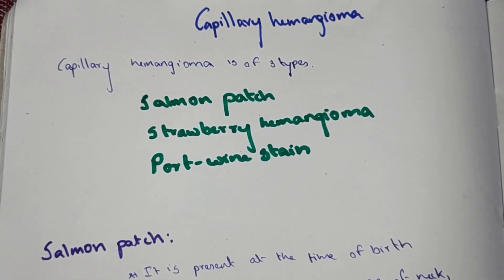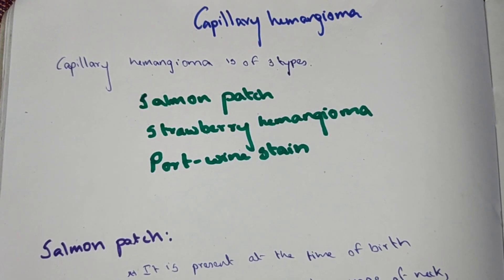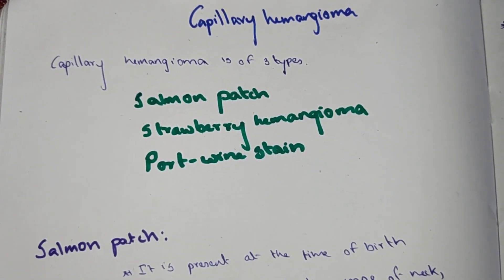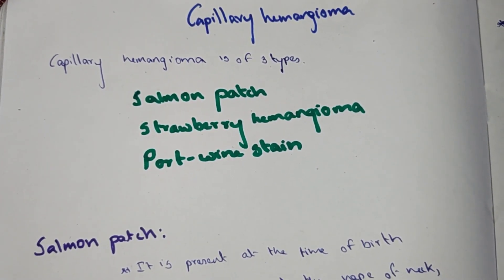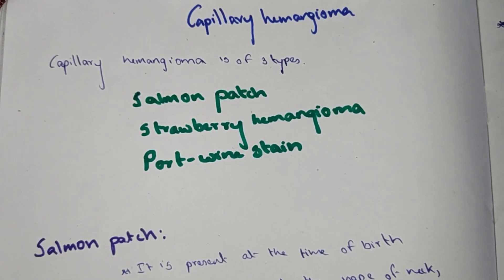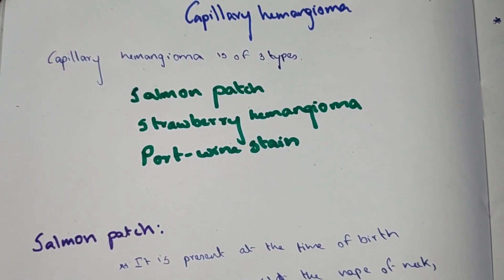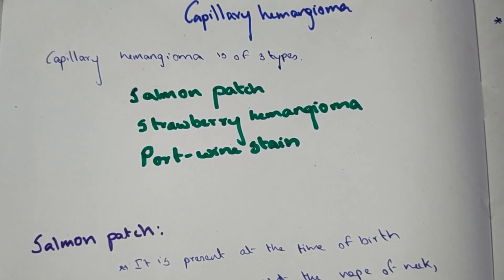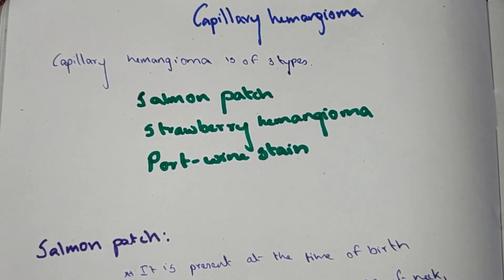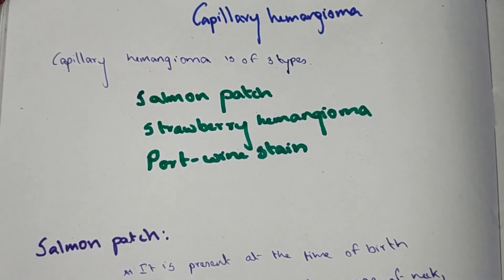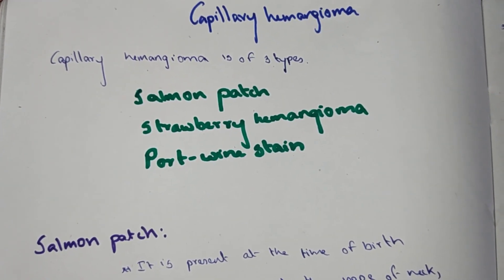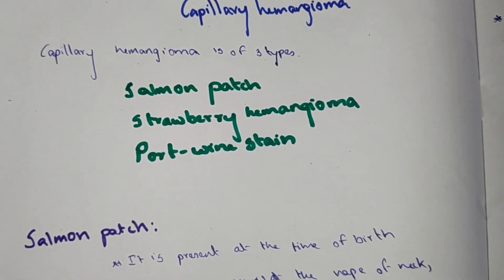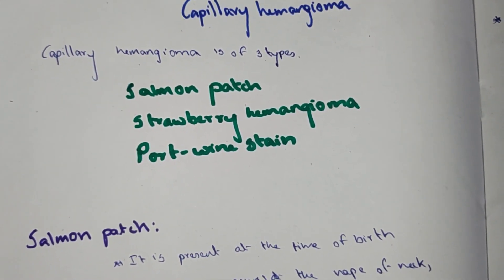Welcome to this video about capillary hemangioma. Capillary hemangioma is of three types: salmon patch, strawberry hemangioma, and port wine stain. Generally, hemangioma is a benign tumor which occurs in the blood.